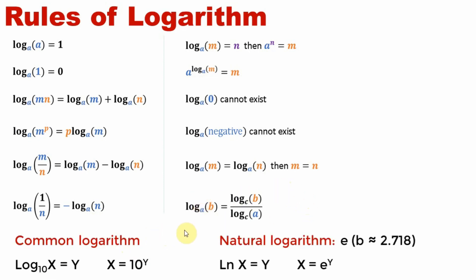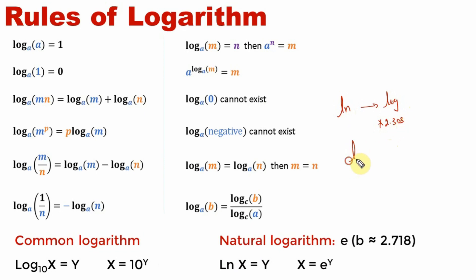Here are a couple of common logarithms we use. Most commonly we use common logarithm of base 10, so x = 10^y. Natural logarithm or ln comes up in kinetics — you can see it in the Arrhenius equation. It is to the base e, where e is approximately 2.7. To convert: ln of x equals 2.303 times log of x. That's all you need.